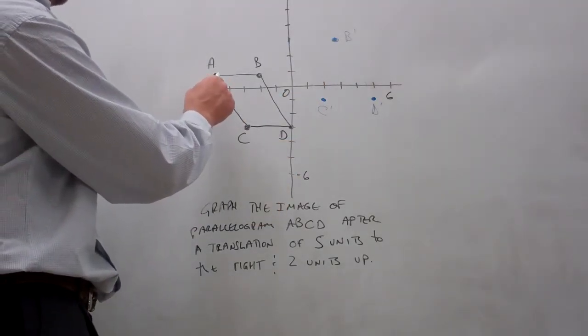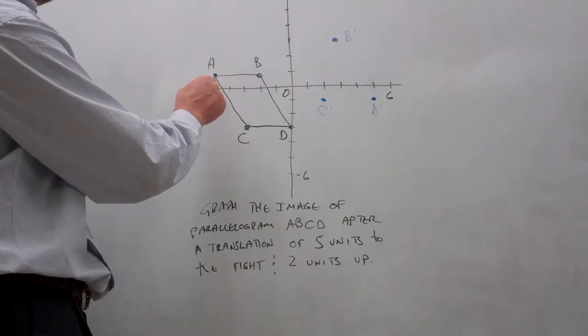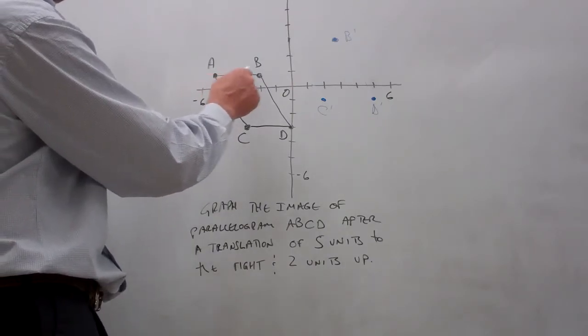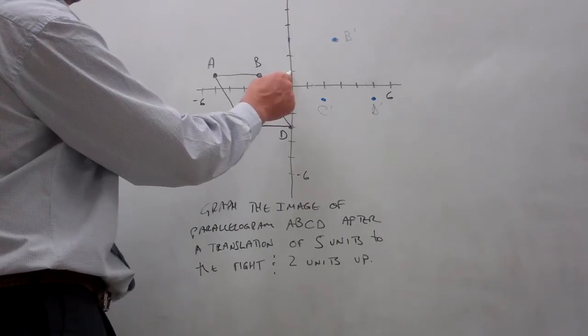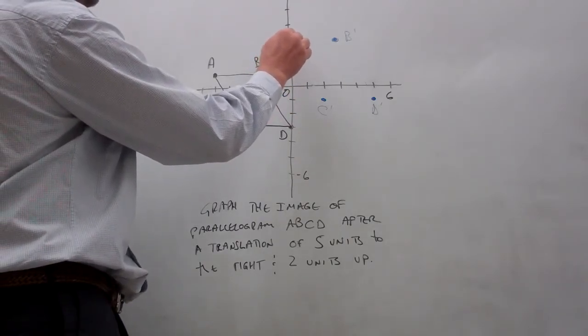And lastly, point A. It has coordinates negative 5, 1. Going five units to the right puts us on the y-axis, and two units up puts us right here.